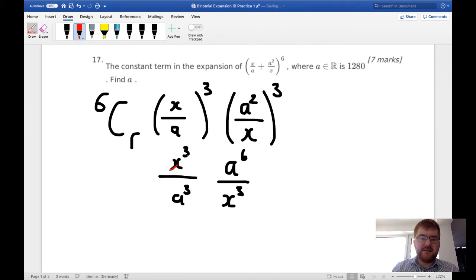We'll notice that this cancels with this, and so we get a constant term, i.e. something in terms of a, and a is just a number. So if this is 3 and this is 3, then our binomial coefficient, i.e. what we want r to be, will be 6 choose 3 at the front, because this power is 3, so this must be 3 as well.